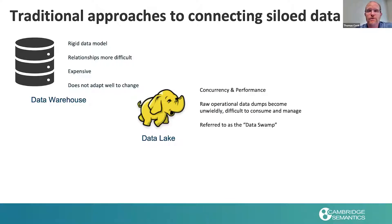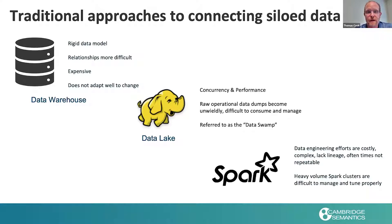Next, we saw the use of data lakes and the promise of the pristine data lake where you drop all of your operational raw data in there and just let people go and analyze it. This promise was never fulfilled and the pristine data lakes were quickly termed data swamps. Next we have Spark — very widely used and adopted today, but the data engineering efforts are very costly and complex. They lack lineage and are oftentimes not repeatable.